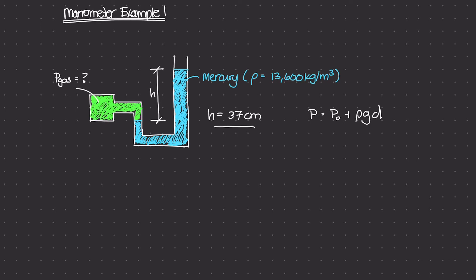In this case our d is this height of 37 centimeters, which converted into meters is 0.37 meters — I just divided 37 by 100 to get this value. This manometer on the right side is open to the atmosphere, so p₀ is right here at the top of the right side, equal to 1 atm, which is 101,300 pascals.